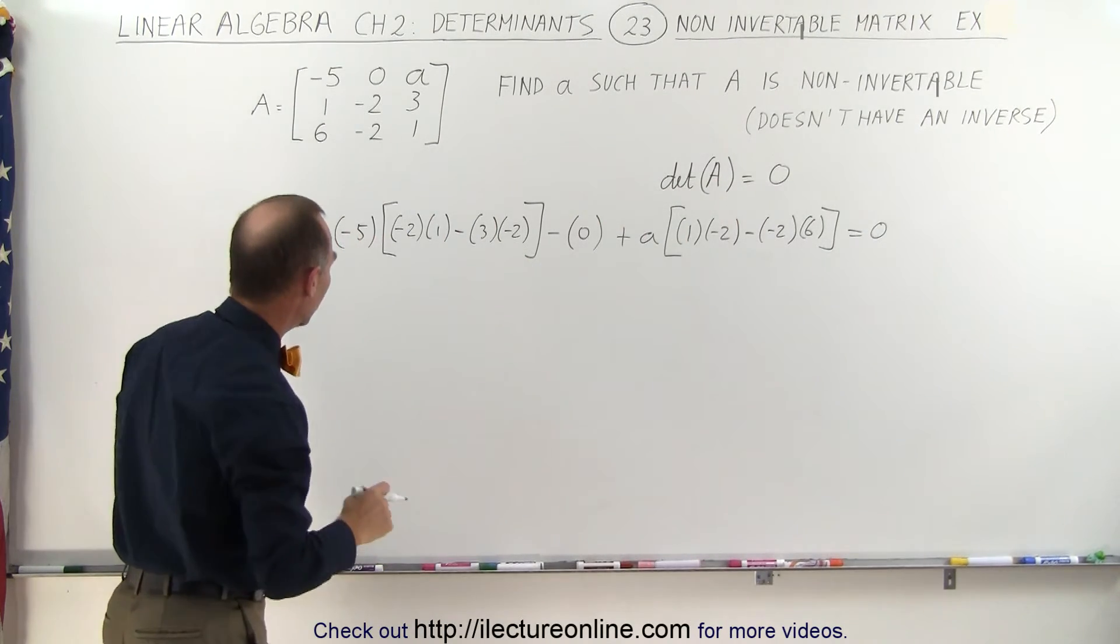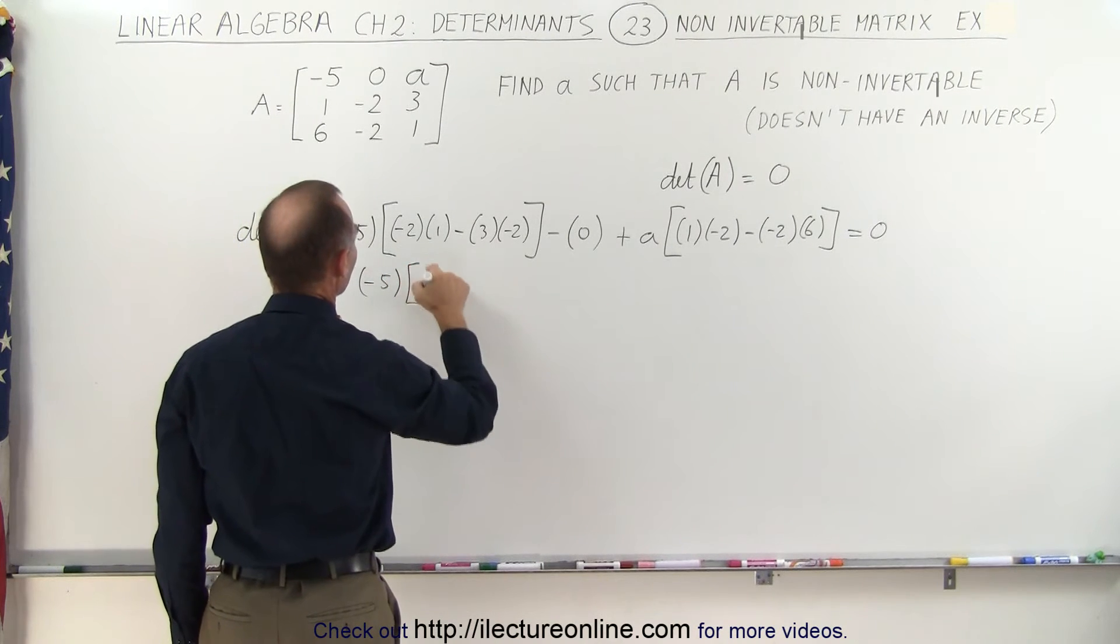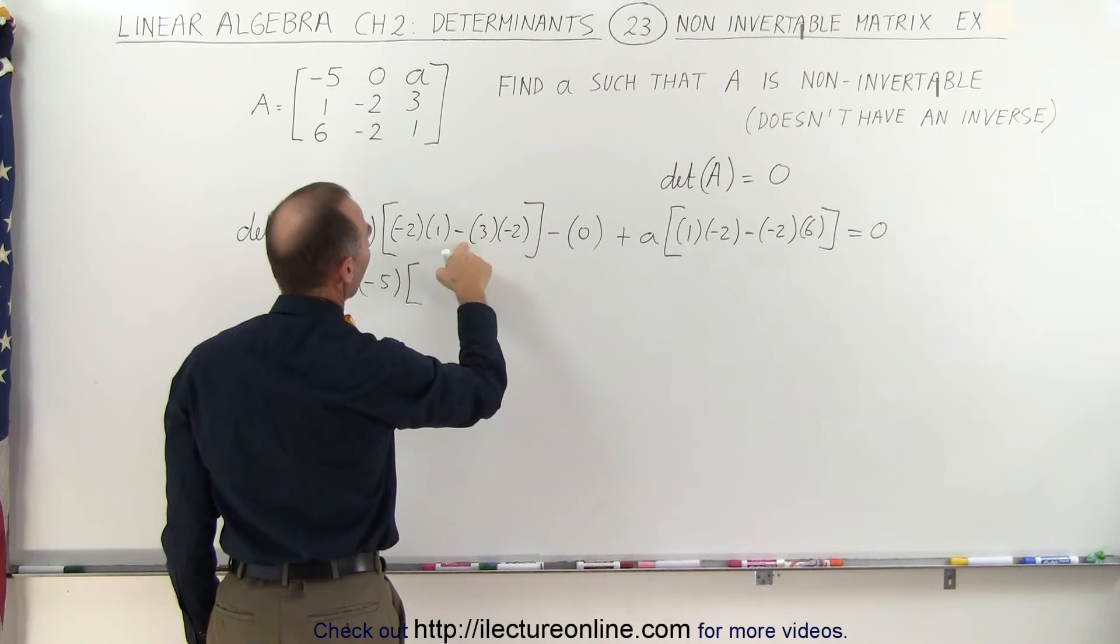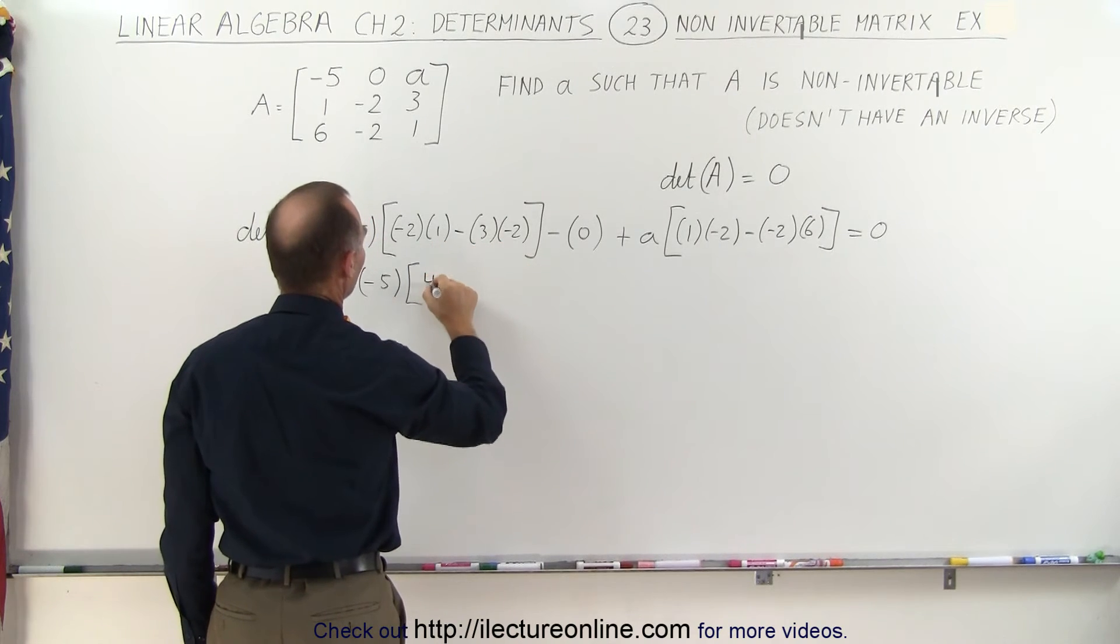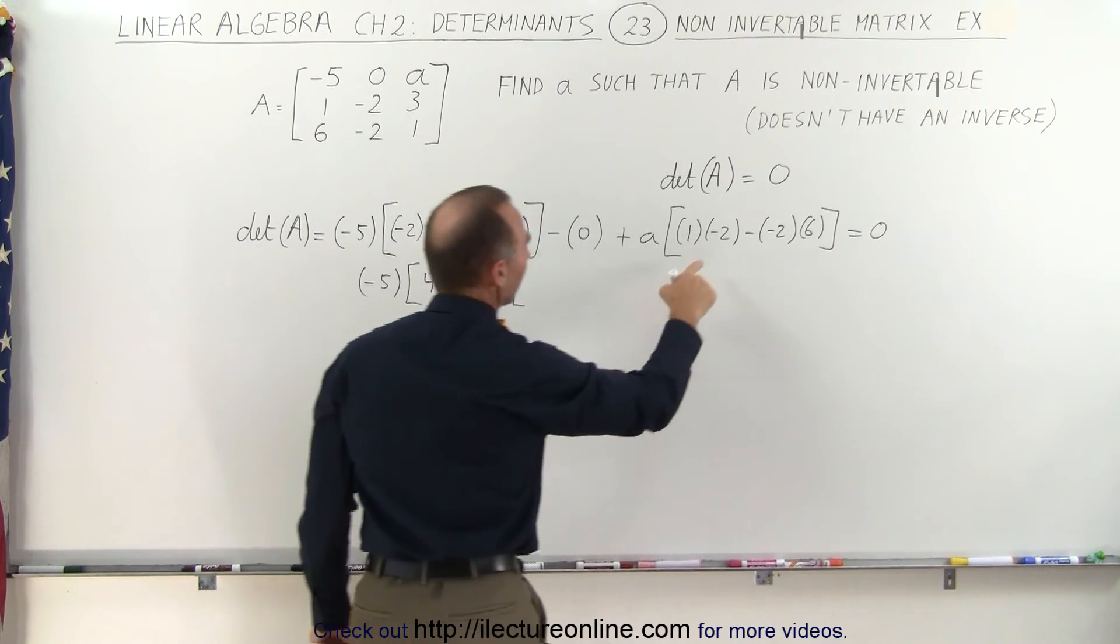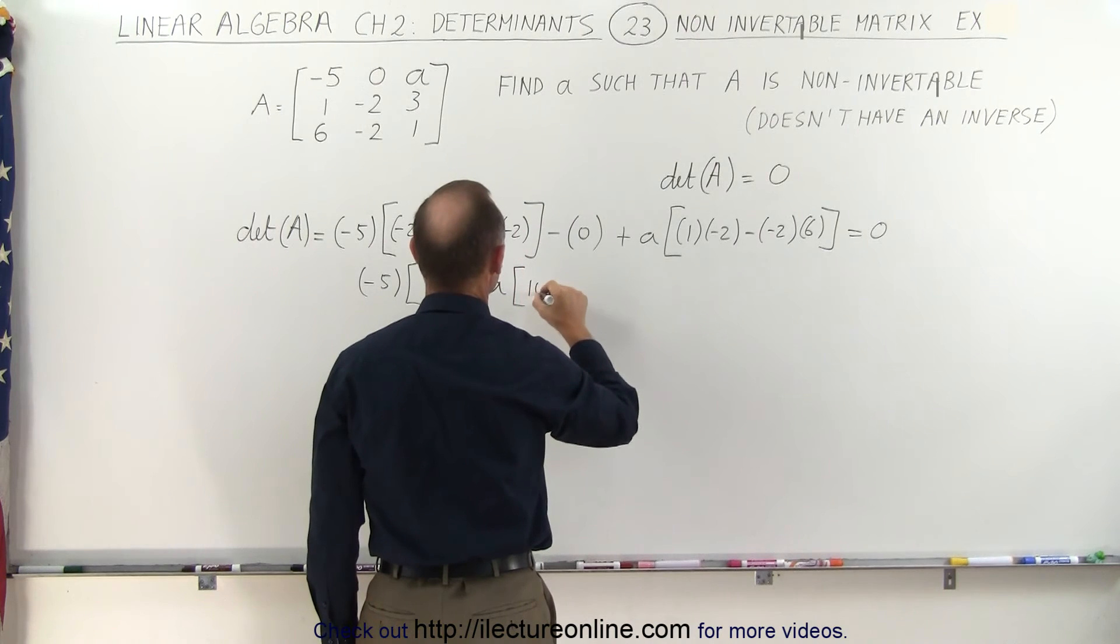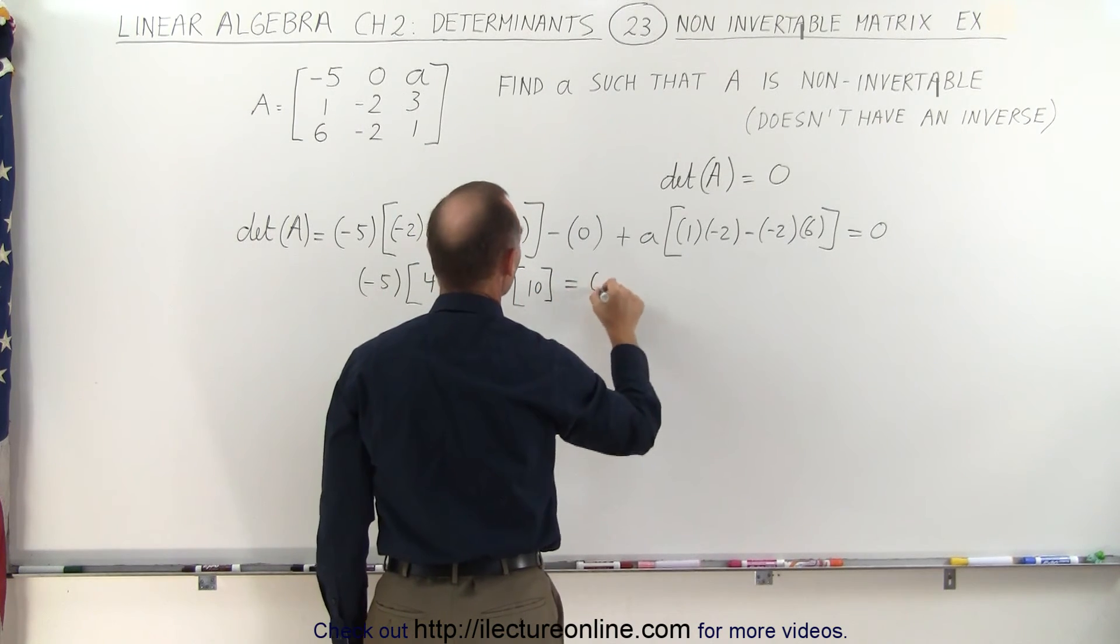Simplifying this a little bit more, we have minus 5 multiplied times that's minus 2 plus 6, that gives us a plus 4, minus 0, and then plus A times minus 2 plus 12, that's plus 10, and that equals 0.